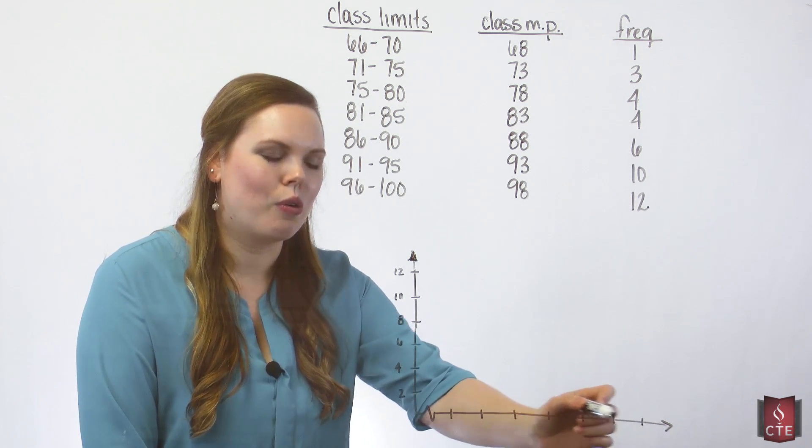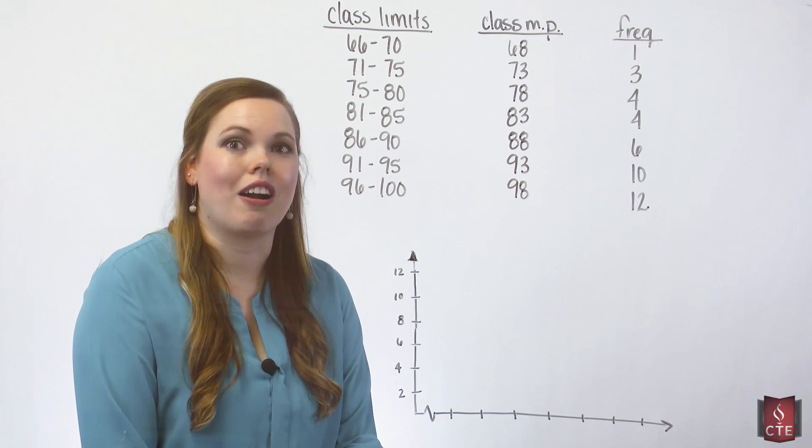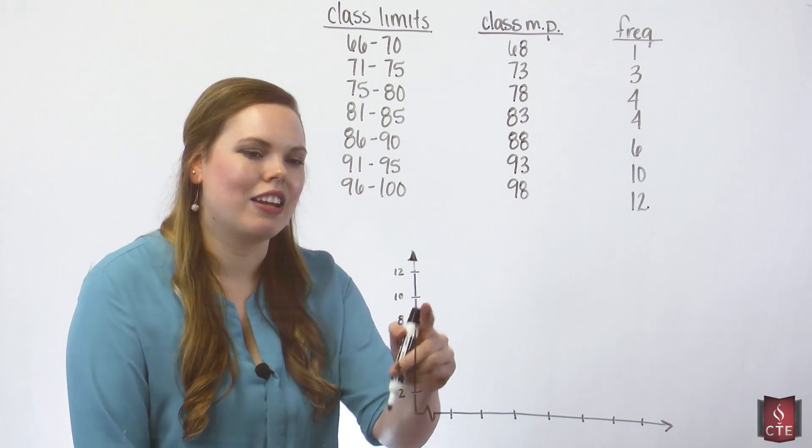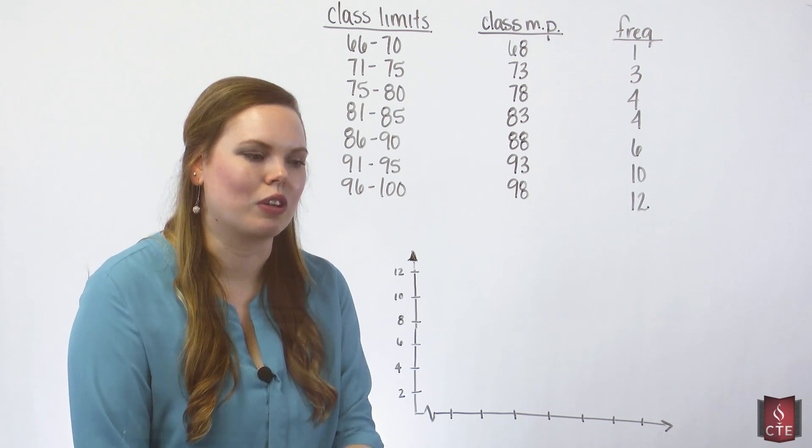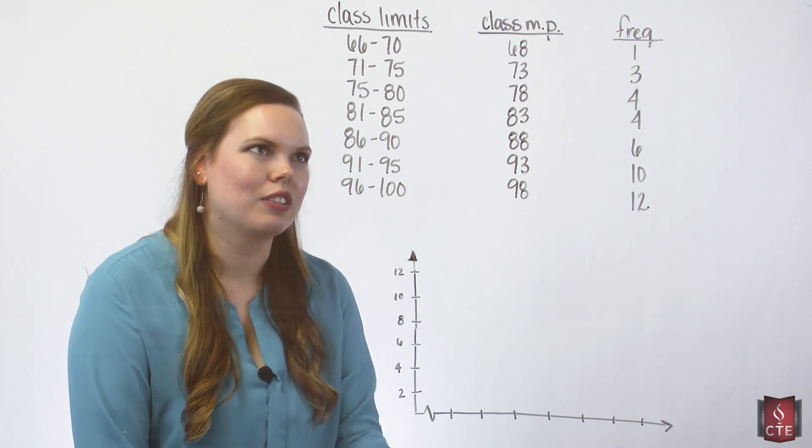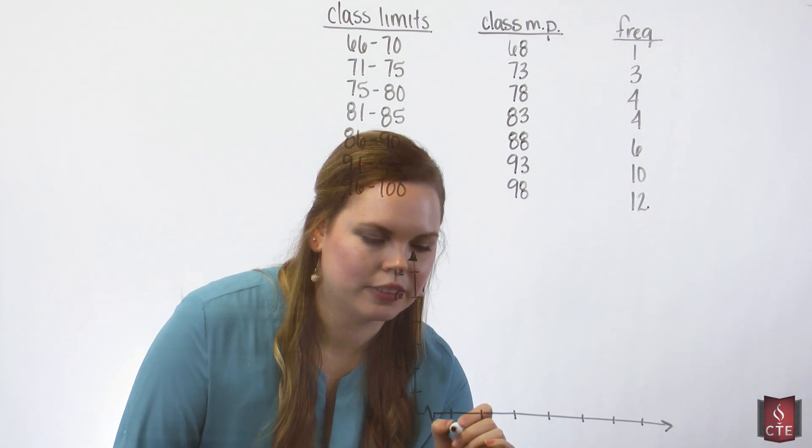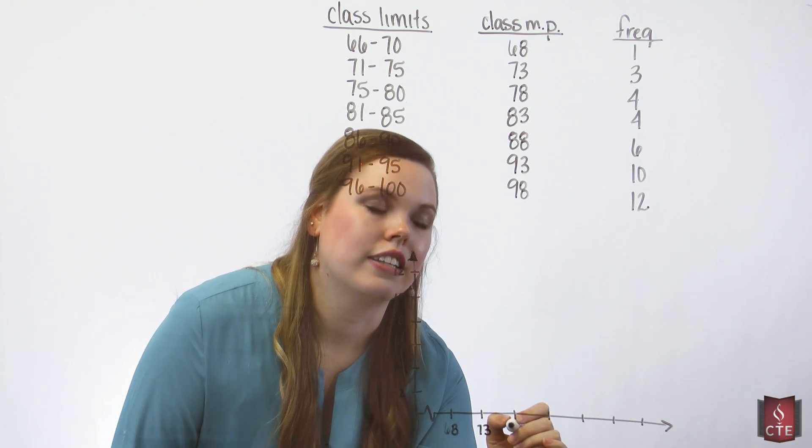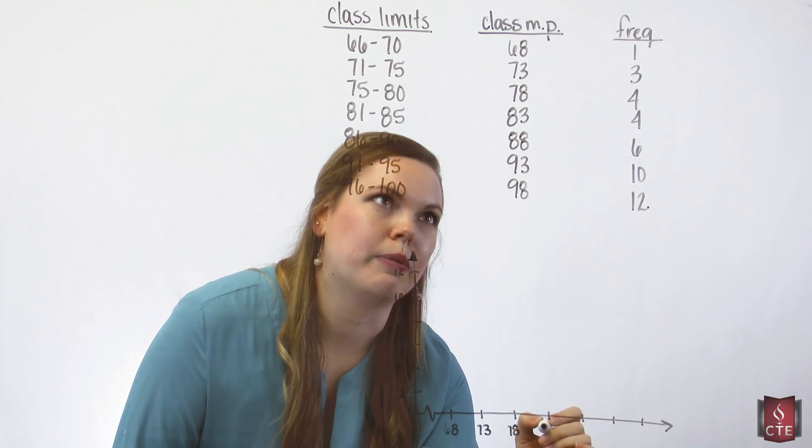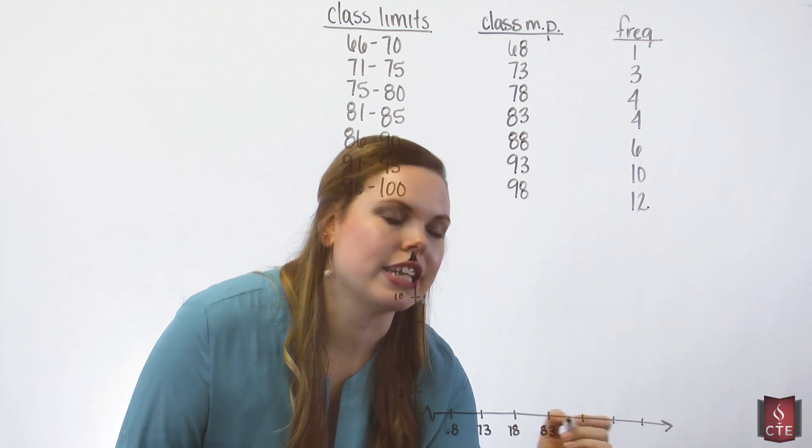So on the horizontal axis here are our midpoints, and then our vertical axis is going to be our frequencies. And that's going to form a line graph. So I'm going to go ahead and write down my midpoints on this horizontal axis, and the variable name of these midpoints is the years.